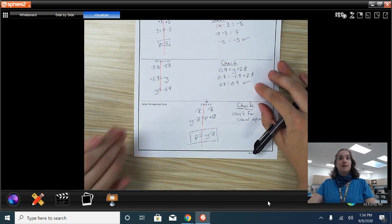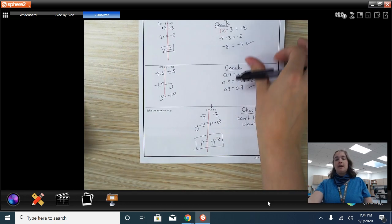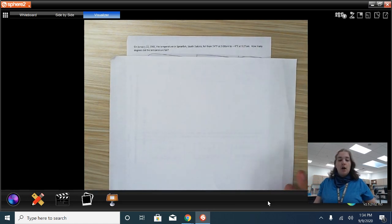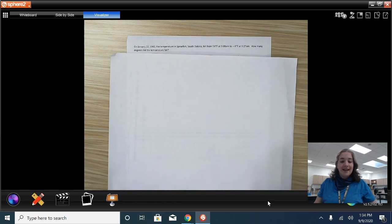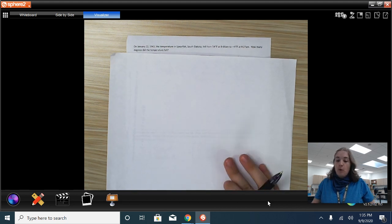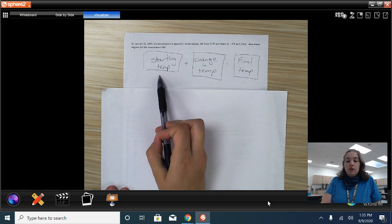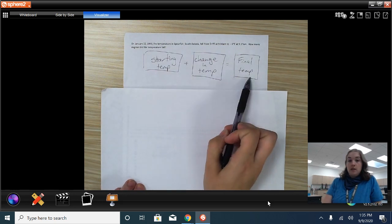Now let's try some word problems. Everyone's favorite. So our first word problem. On January 22nd, 1943, the temperature in Spearfish, South Dakota, just north of where my grandfather's from, fell from 54 degrees at 9 a.m. to negative 4 degrees at 9:27 a.m. How many degrees did the temperature fall? Well, to do this, we need that our starting temperature plus the change in temperature is going to equal our final temperature.